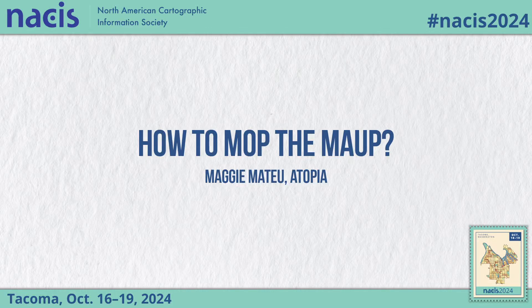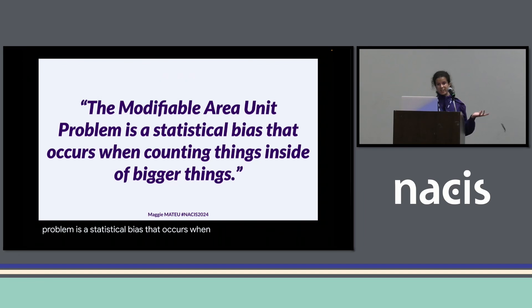The modifiable areal unit problem is a statistical bias that occurs when counting things inside of bigger things. That's it.